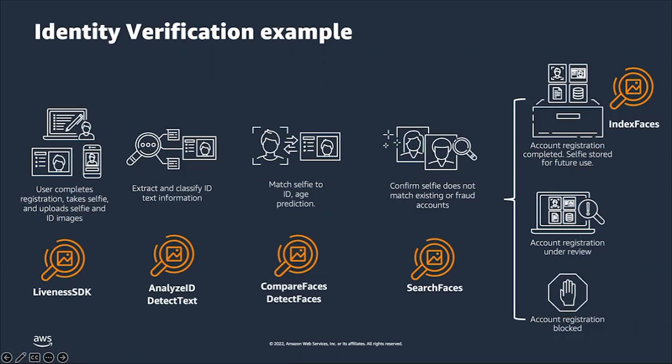We also have a different flavor of face matching called one-to-many or face search. In this scenario, a bank can take an image of a new enrolling user and search against face representations of previously enrolled accounts, or against previously flagged fraudulent users. The bank can search against that collection to make sure this new account isn't already a duplicate account holder or a previously flagged fraudulent user.